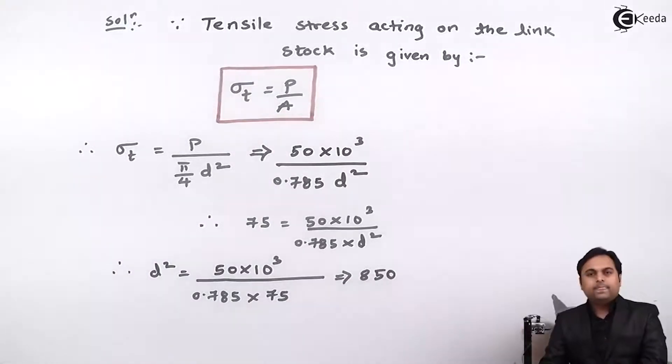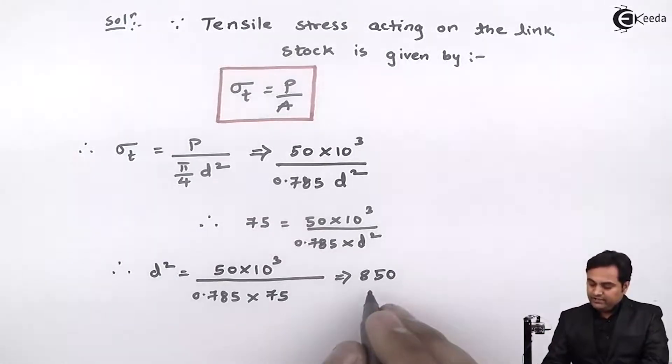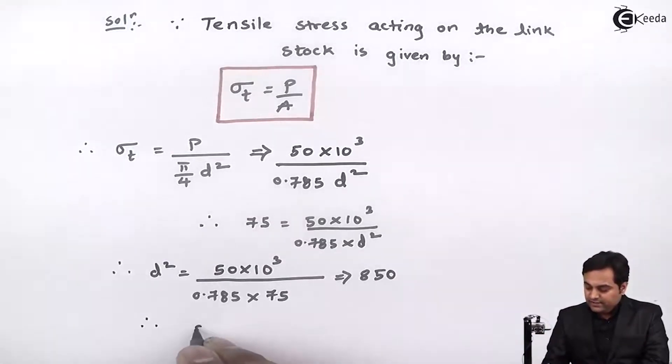And from this, here first I'll get the value of d square that comes out to be 850, and since we want d, so I will take the square root of this, and then the diameter comes out to be 29.13 mm.